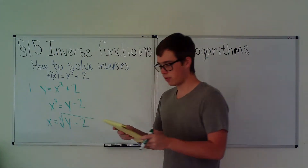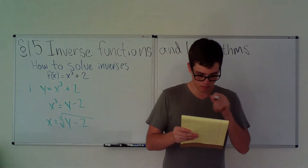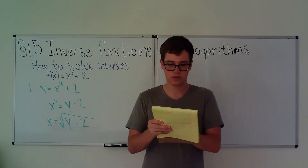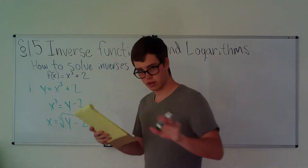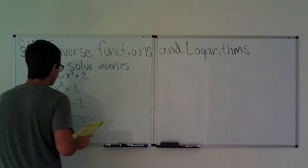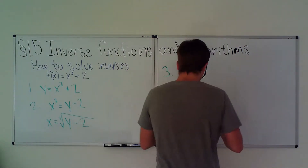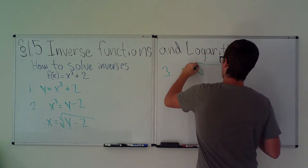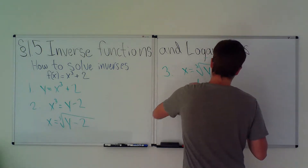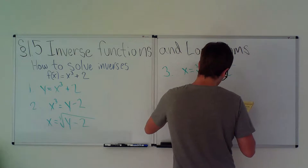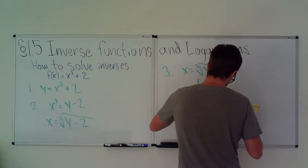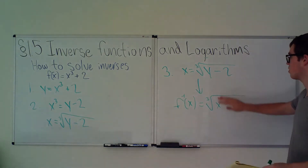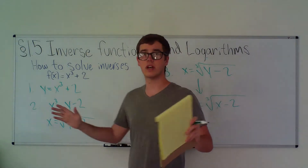Then you replace x with y and change y to f⁻¹(x) — also pretty easy but it sounds kind of confusing. That's Step 3: swap x and y to get f⁻¹(x) = ∛(x − 2), and you're done with solving inverses.